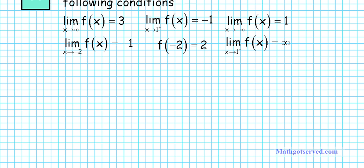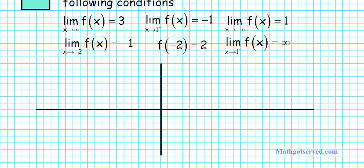First thing we want to do is draw a coordinate system — our y-axis and x-axis. I like to draw horizontal asymptotes first, because they represent the behavior of the function at plus or minus infinity. We know that as x approaches infinity the function approaches 3, and as x approaches negative infinity the function approaches 1. This means we have two distinct horizontal asymptotes — the asymptote to the right is different from the one to the left.